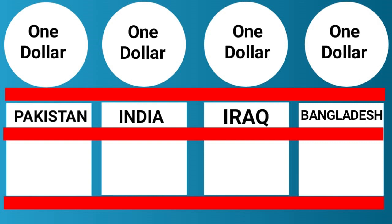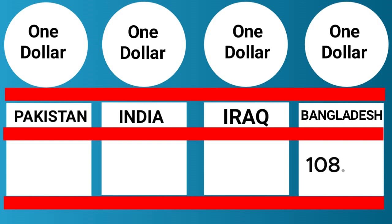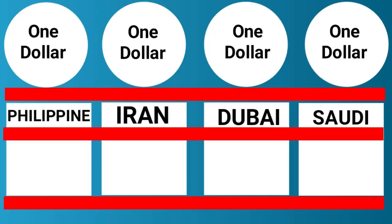1 US dollar is equal to 1,309 Iraqi dinars. 1 US dollar is equal to 108.30 Bangladeshi taka. 1 US dollar is equal to 56 Filipino pesos.